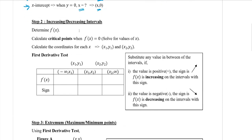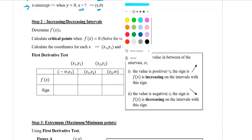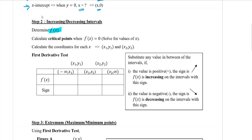The next step is the increasing or decreasing intervals. What you need to do is determine f'(x) — that means you need to calculate f'(x). Then, calculate the critical points when f'(x) equals 0. This is important. When f'(x) equals 0, solve for the value of x. Next, calculate the coordinates for each value of x.